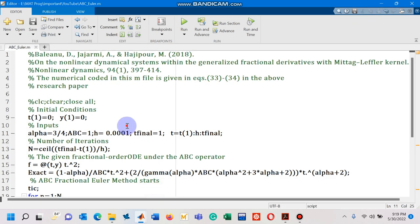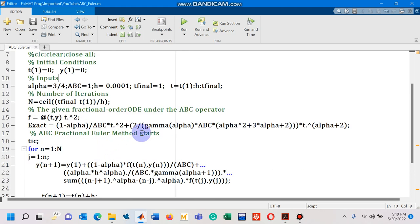So, this is the code that would help you to simulate an ordinary differential equation defined with ABC operator and the numerical method is called the fractional Euler method. So you saw the behavior of one order of decrease, the same behavior we have actually observed in the classical Euler method in the classical calculus which is the first order method.